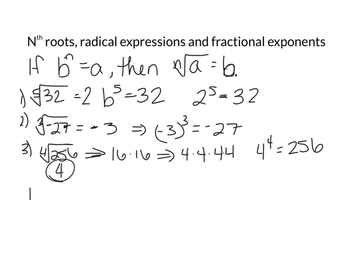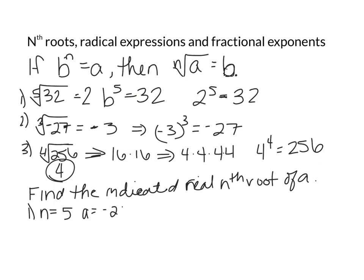Now the book is going to start and ask you to find the indicated real nth root of a. So we have the first example, it's going to say n equals 5 and a equals negative 243. So we want the fifth root of negative 243. 243 is I believe 9 times 27, and that's 3 times 3 and that's 3 times 3 times 3. So we get negative 3.